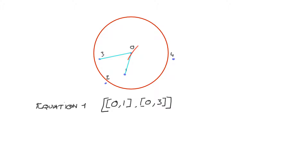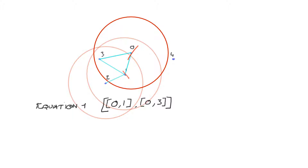Before continuing, we remove the point because we already have a connection to it and don't need to process it again. We remove it from the list and move to the next point, point one. For point one we check which points are in the circle — point zero doesn't need to be processed, so we connect to point two and point three. Then we remove point one from the list and move on to the next point.